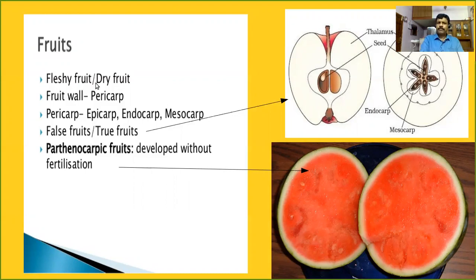Some fruits like mustard and groundnut are in dry condition, so they are collectively called dry fruits. The classification of fruits you have learned in class plus one in the topic of morphology of angiosperms.